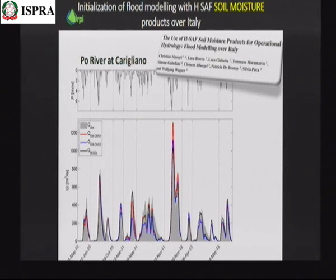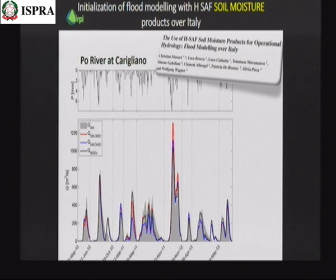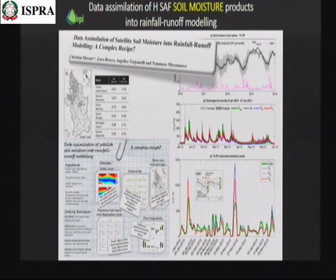Comparing with continuous running hydrological models, we see similar results. The black curve is the continuous model and the red and blue ones are the curves with initialization using different HSAF products. This was for quite large catchments compared to typical Italian catchment scale. The products in their current version are now ready for operational use in hydrological model initialization or even for data assimilation to update the state of continuous hydrological models.